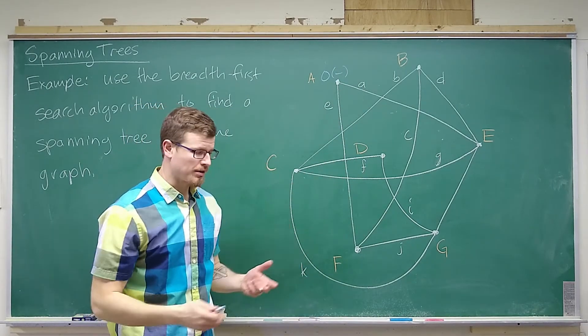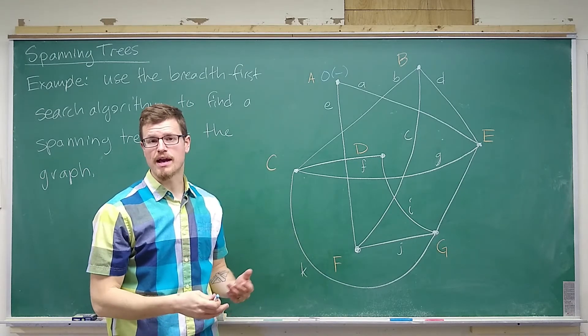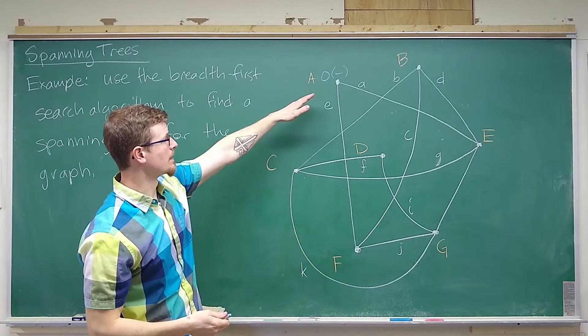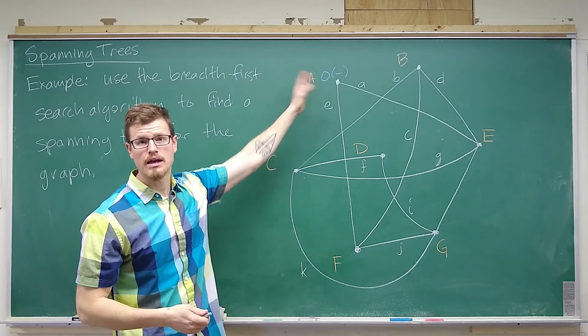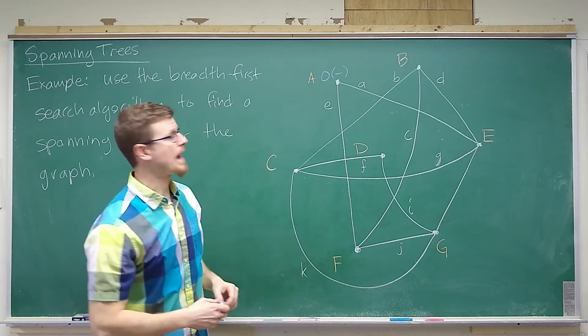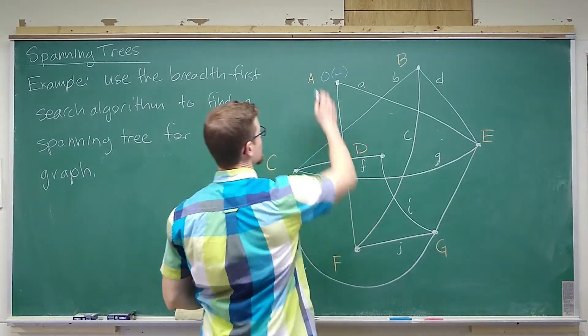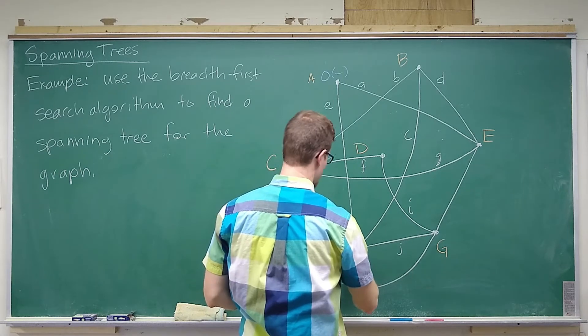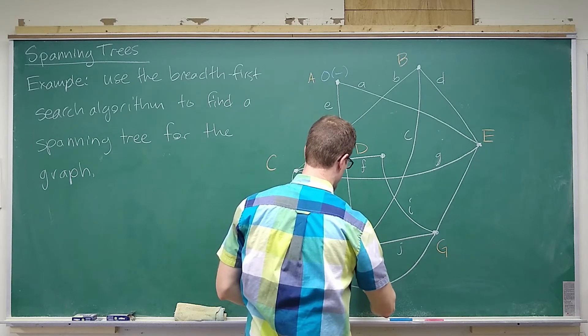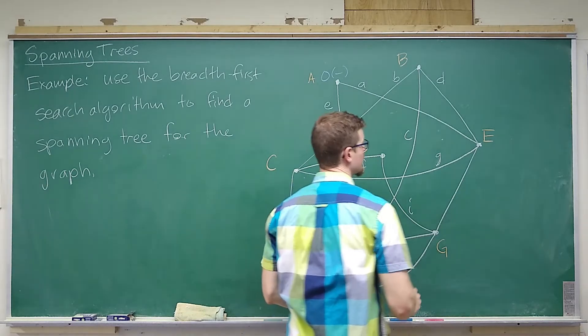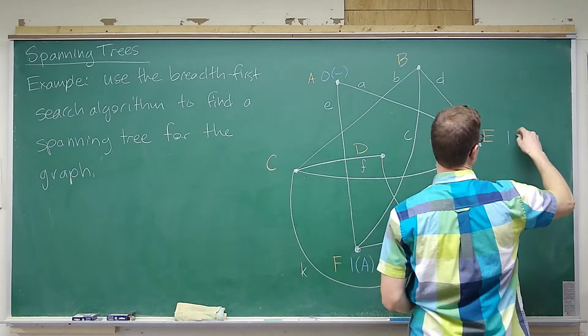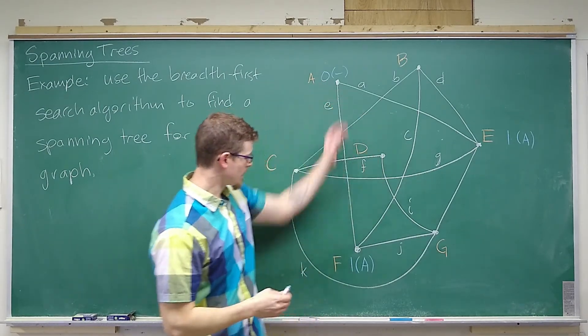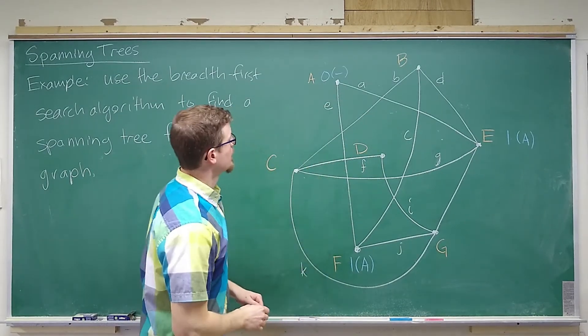We're using the breadth-first search algorithm in exactly the same way that we have been. We label the vertices with a distance that they are from A, and the vertex that precedes them in the shortest path. So adjacent to A are the vertices F and E, so F is a distance of 1 from A, and E is a distance of 1 from A. A precedes it in the shortest path.